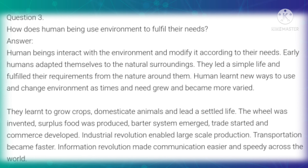Third essay question: How do human beings use the environment to fulfill their needs? Answer: Human beings interact with the environment and modify it according to their needs. Early humans adapted themselves to natural surroundings, led a simple life and fulfilled their requirements from the nature around them. Humans learned new ways to use and change the environment as they grew more aware. They learned to grow crops, domesticate animals and lead a settled life. The wheel was invented, surplus food was produced, the barter system emerged, trade started, and communities developed. The industrial revolution enabled large-scale production; transportation became faster; the information revolution made communication easier and speedy across the world.